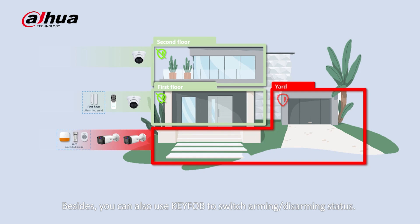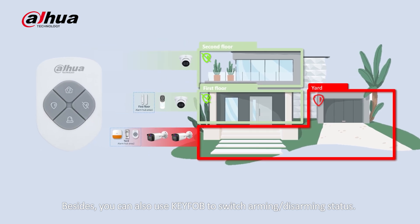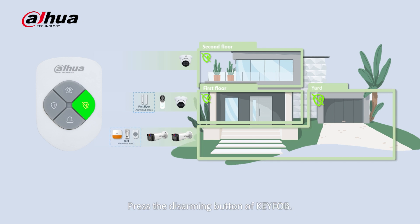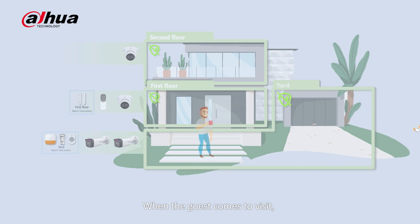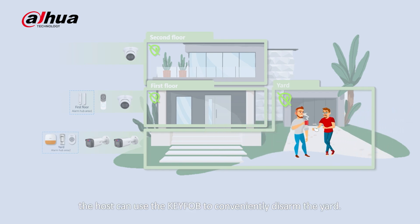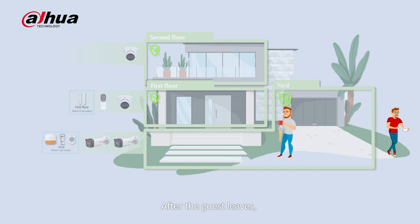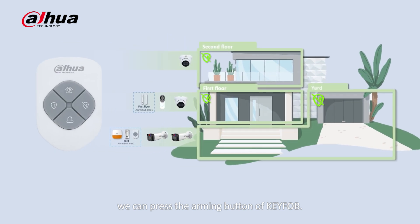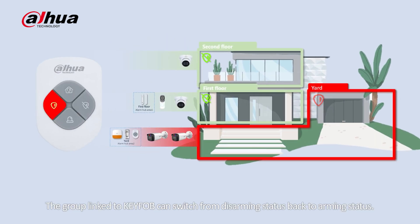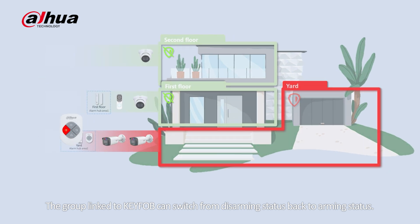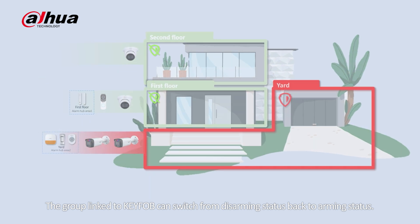Besides, you can also use a key fob to switch arming or disarming status. Press the disarming button of the key fob. When a guest comes to visit, the host can use the key fob to conveniently disarm the yard. After the guest leaves, press the arming button of the key fob, and the group linked to the key fob switches from disarming status back to arming status.